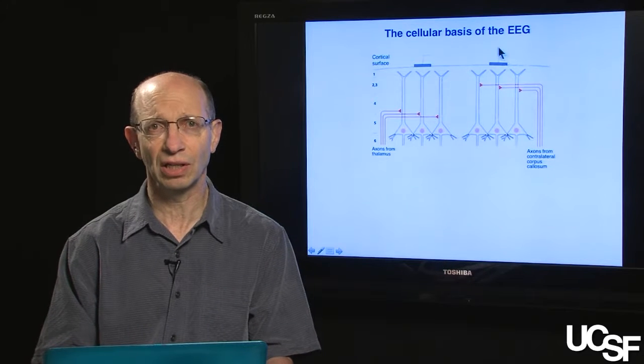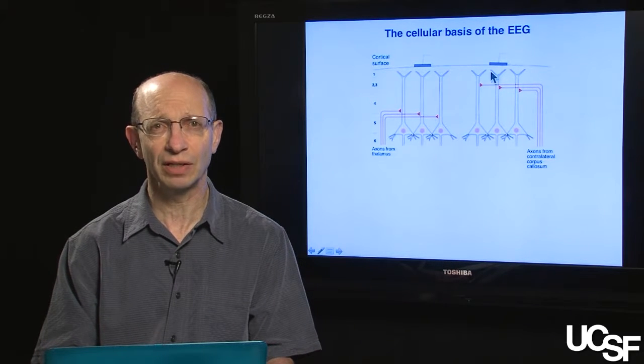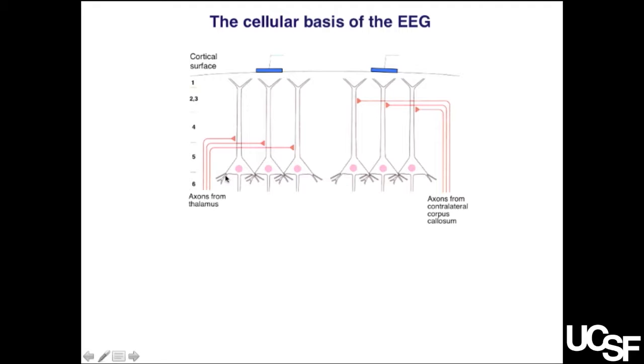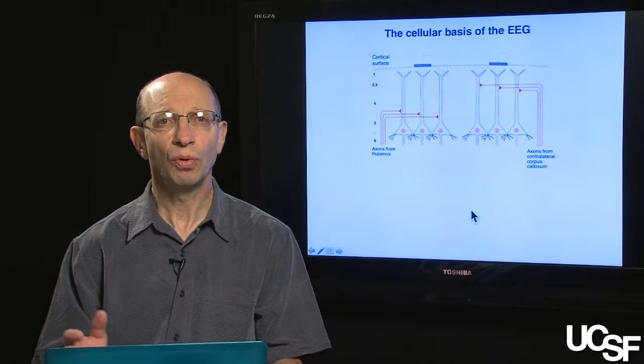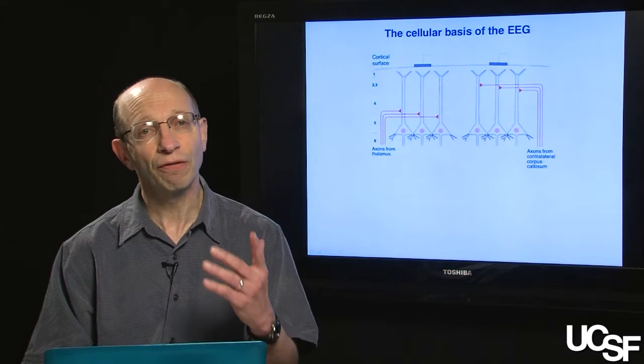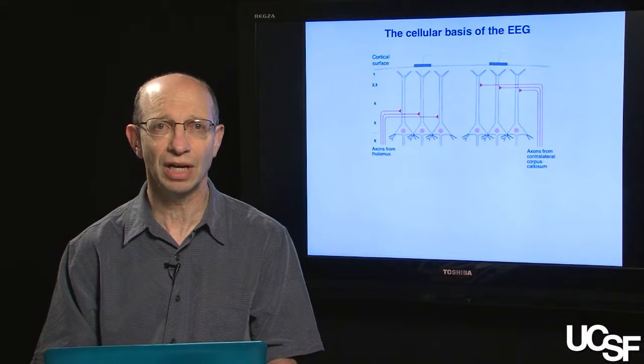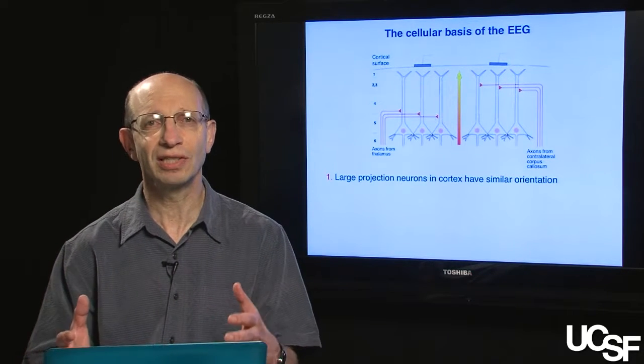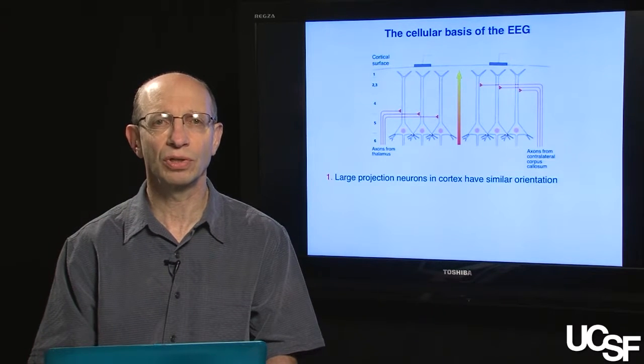These are meant to be large pyramidal neurons or projection neurons that have their axons actually coursing in towards the brain here, and their dendrites are all oriented in a similar fashion up towards the surface of the cortex. On top of the cortex, I've placed two EEG electrodes. In the typical EEG, these electrodes would be up at the scalp. The first concept that's important to understand is that the large projection neurons in the cortex have a similar orientation.